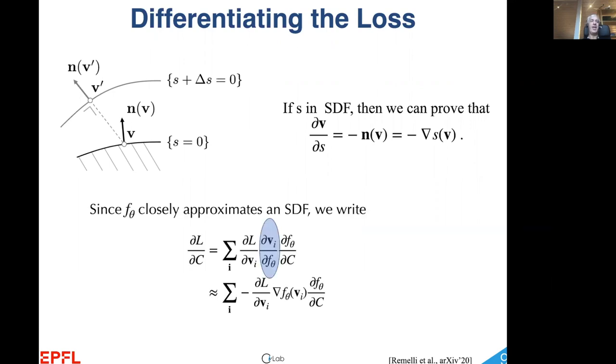And since F theta closely approximates a signed distance function for each vertex, we can approximate the derivative of dV over dF by the gradient of F, which makes the whole loss differentiable.